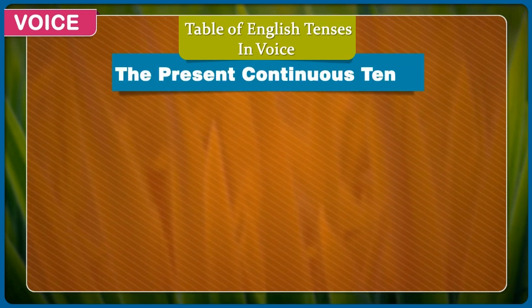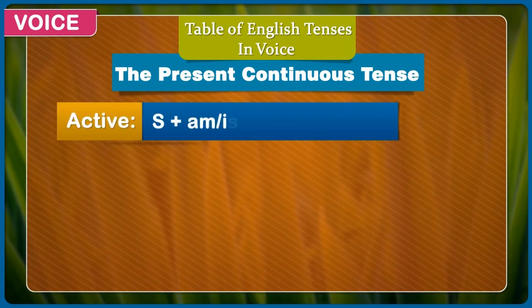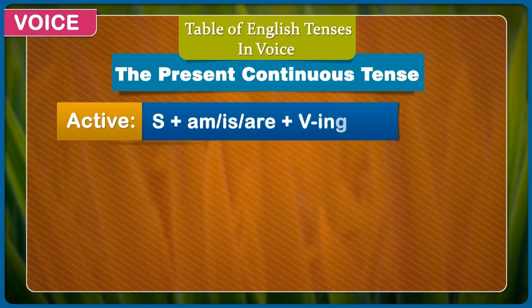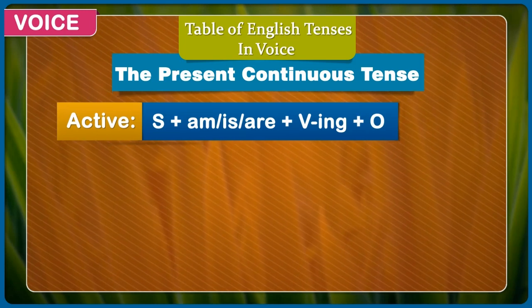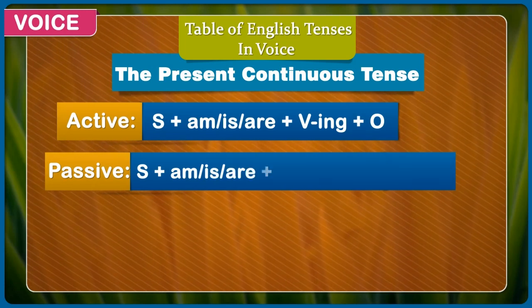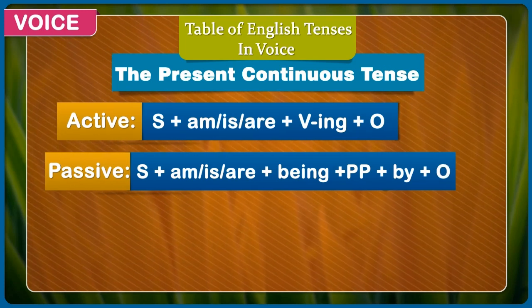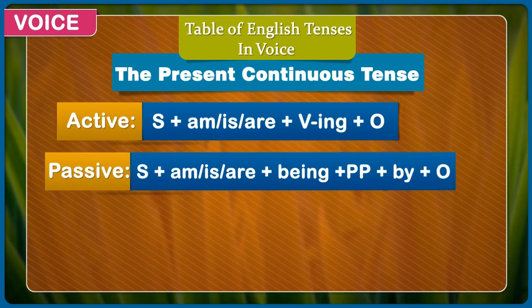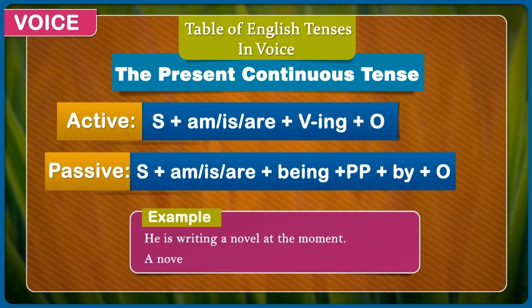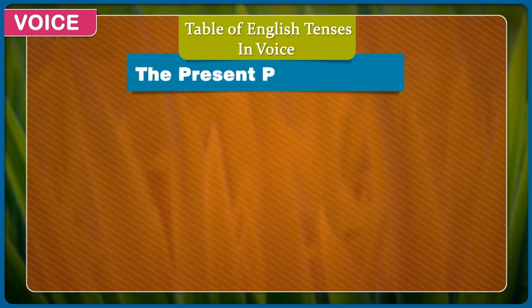The present continuous tense. Active: subject + am/is/are + verb with -ing + object. Passive: subject + am/is/are + being + past participle + by + object. Example: He is writing a novel at the moment. A novel is being written by him at the moment.